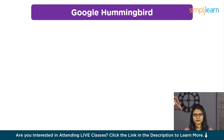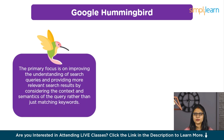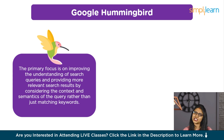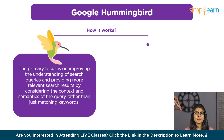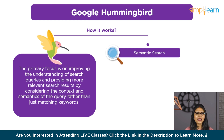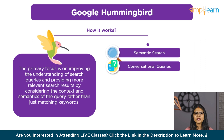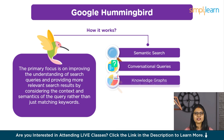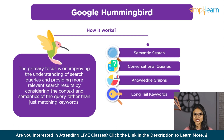Google Hummingbird is a search algorithm introduced by Google in August 2013. Unlike previous updates like Panda and Penguin, Hummingbird is not just an update but an entirely new algorithm. Its primary focus is on improving the understanding of search queries and providing more relevant search results by considering the context and semantics of the query, rather than just matching keywords. Hummingbird revolutionizes search through semantic search, understanding context for precise results. It excels in interpreting conversational queries, integrates with the Knowledge Graph for direct answers, and effectively ranks long-tail keywords. By prioritizing user intent, Hummingbird ensures highly relevant results, enhancing the search experience.